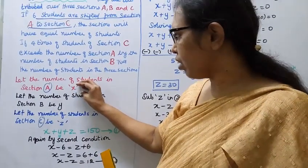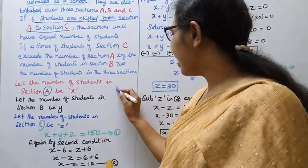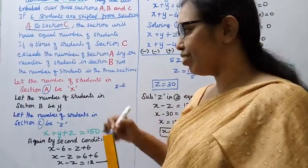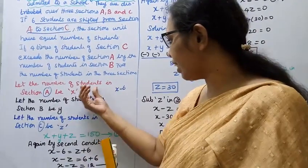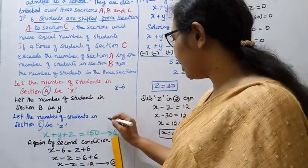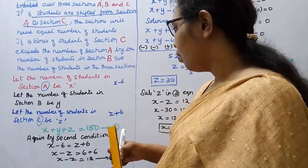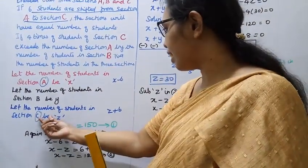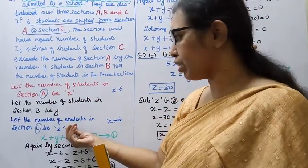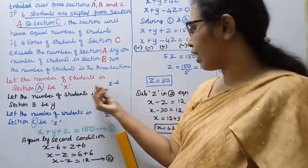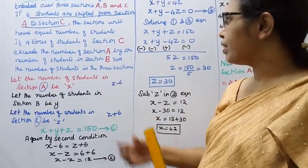6 students are shifted, so section A becomes x minus 6. In section Z (C), 6 students are added, so it becomes z plus 6.